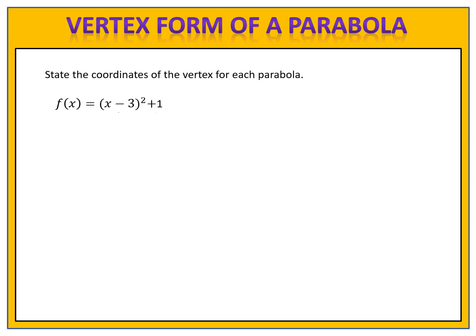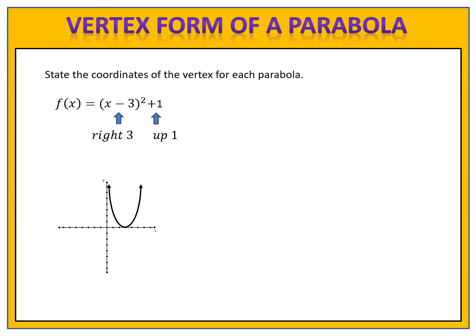How about this one? Can you identify the turning point or vertex of this parabola? Pause the video here and let's see how you do. We see that we have a minus 3 in the parentheses and a plus 1 on the outside. The minus 3 inside tells us we're going to shift right 3; the plus 1 tells us up 1. We shift our parabola right 3 and up 1 unit, giving us the coordinates of the vertex at (3, 1).